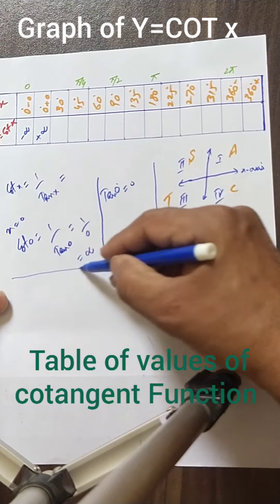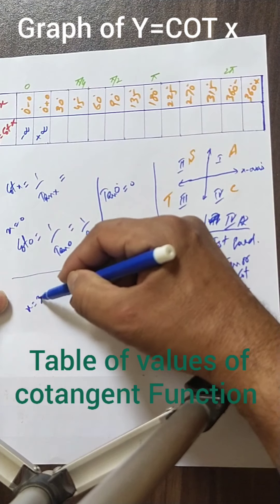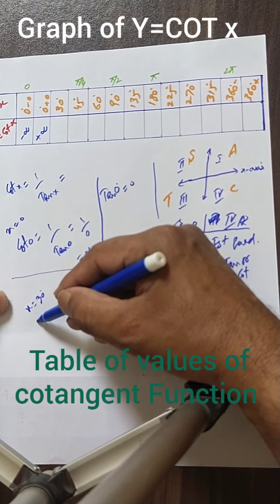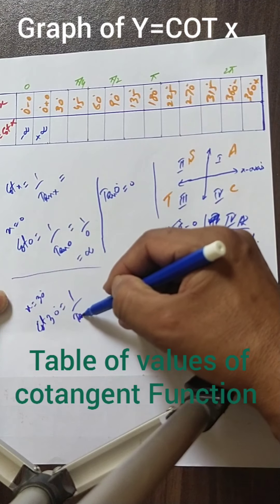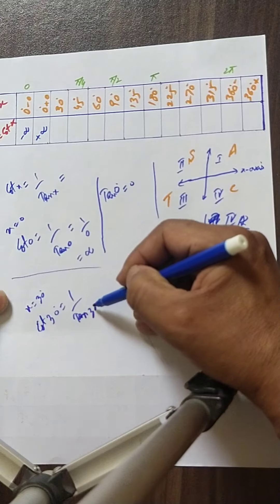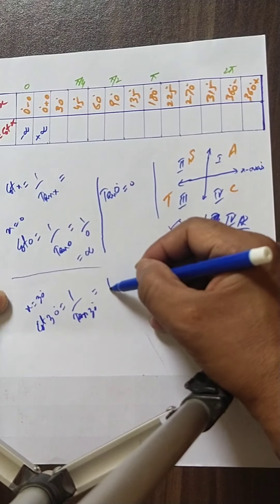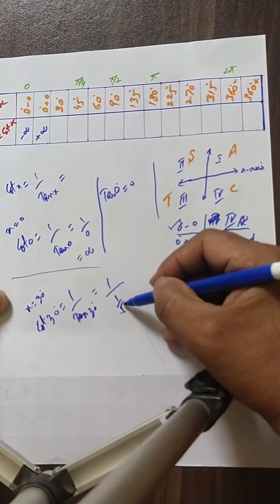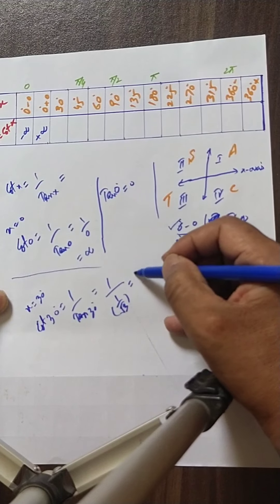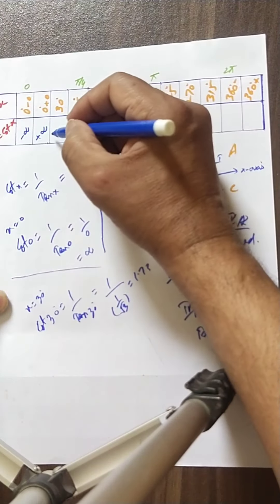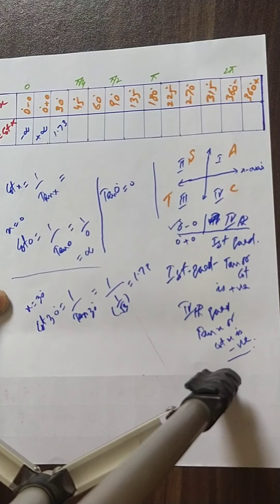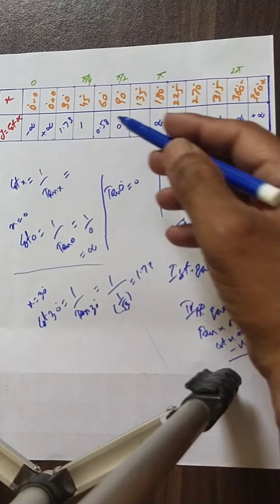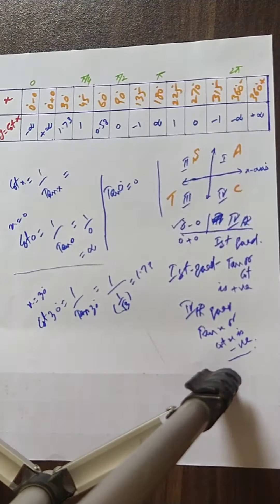When x is 30 degrees, cot 30 equals 1 over tan 30, which is 1 over (1 over square root of 3), giving 1.73. Similarly, please complete these values. I have completed the remaining values — please keep in mind this table.